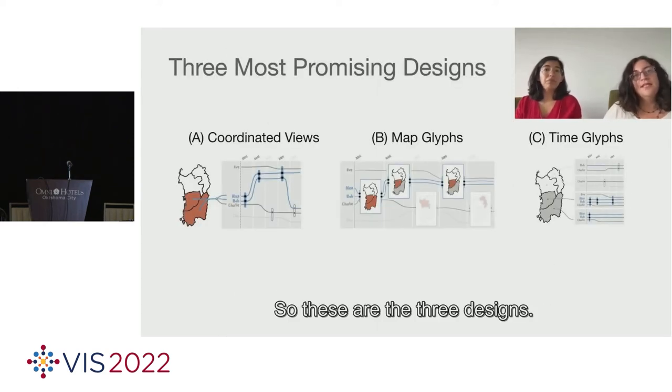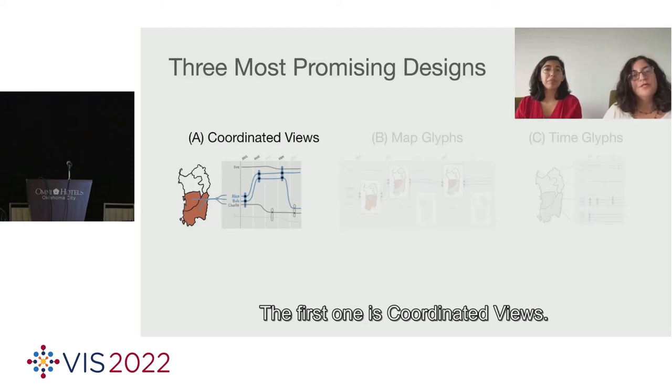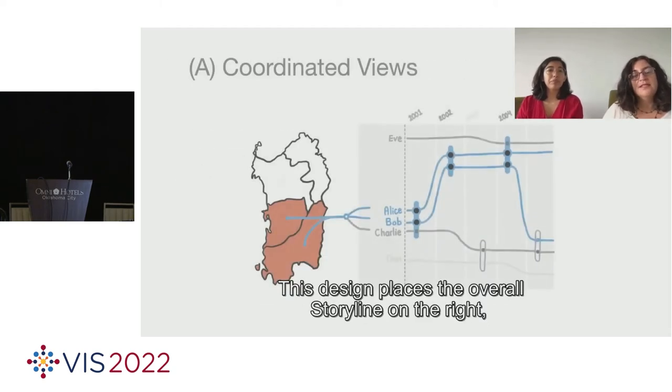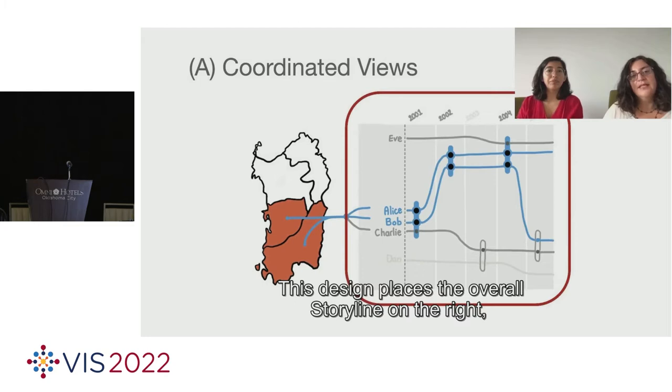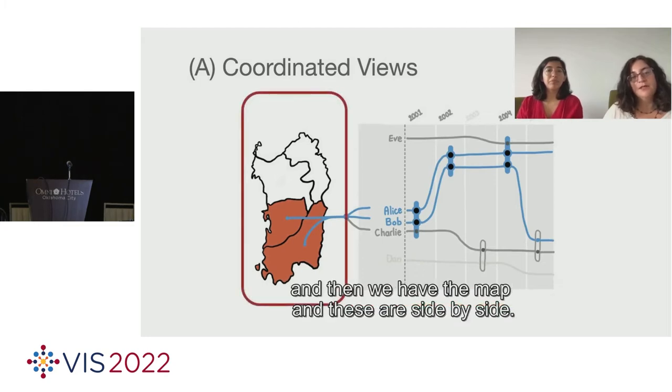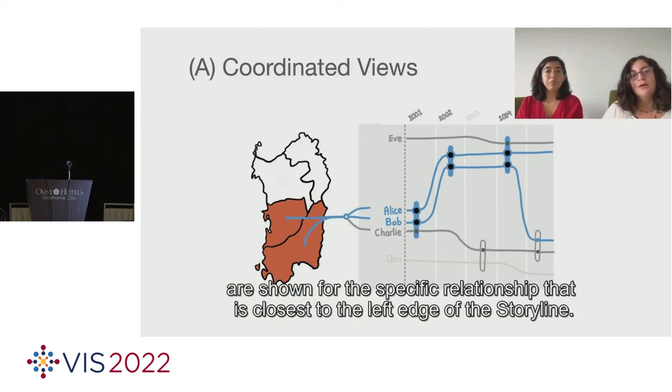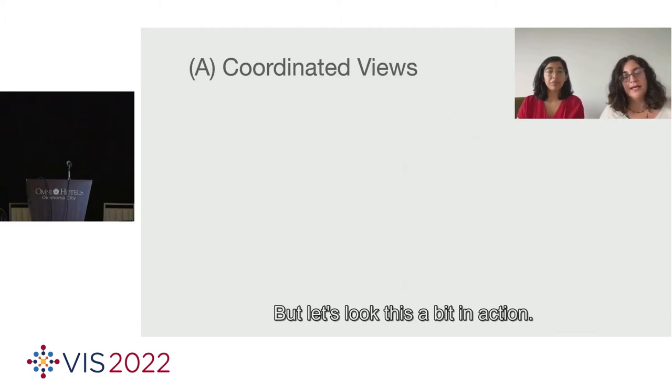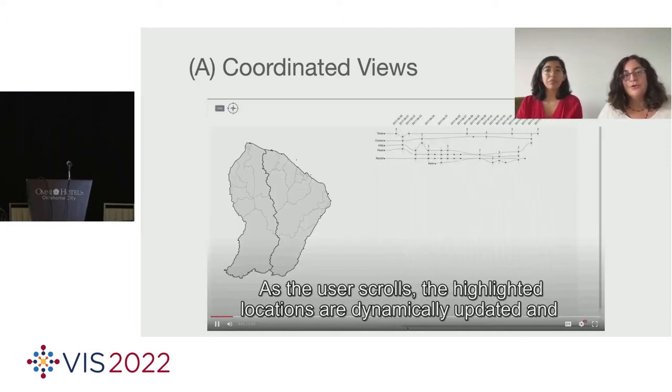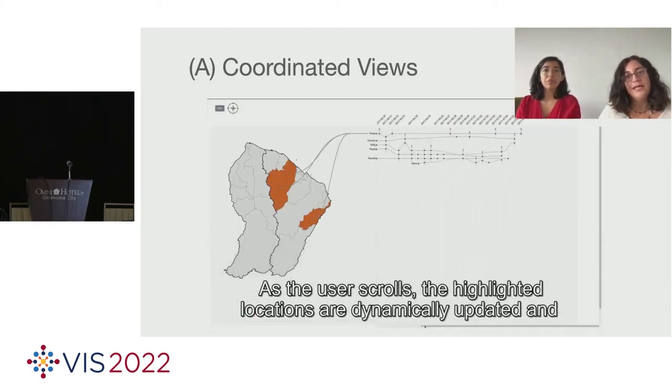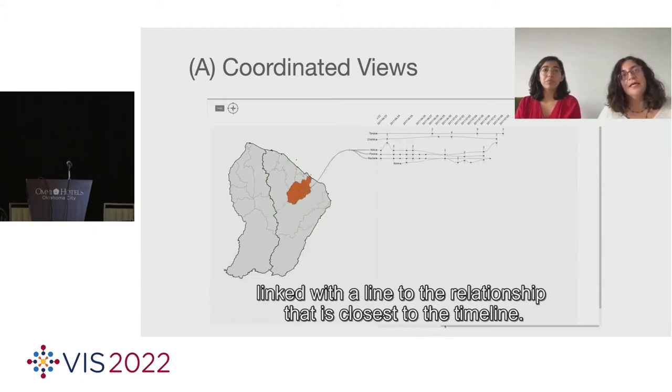So these are the three designs. Let's look at them one by one. The first one is Coordinated Views. This design places the overall storyline on the right. And then we have the map, and these are side by side. The highlighted locations that are seen here in orange in the map are shown for the specific relationship that is closest to the left edge of the storyline. As the user scrolls, the highlighted locations are dynamically updated and linked with a line to the relationship that is closest to the timeline.